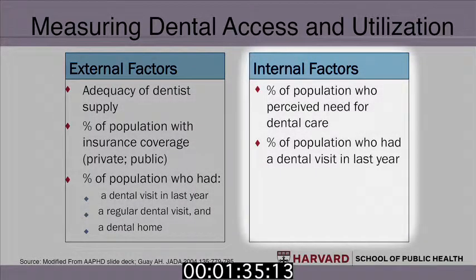Now, discussions of access take into account factors internal to the patient, such as their perceived need for or want of dental care, their willingness to seek care, and their actual use of care that is available to them. Internal factors relate directly to a patient's demand for care and may operate independent of the availability of that care. A focus on internal factors can become even more complicated, as other factors such as oral health literacy can influence a patient's perceived need for care. I will focus on the external factors to frame the next topic on access, and will present data on adequacy of the supply of dentists, who has dental insurance coverage, and who has visited the dentist.